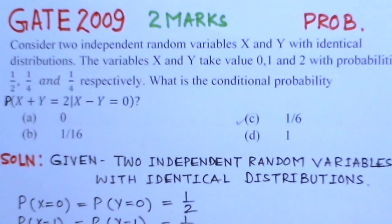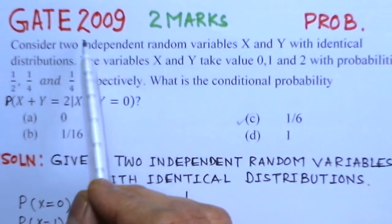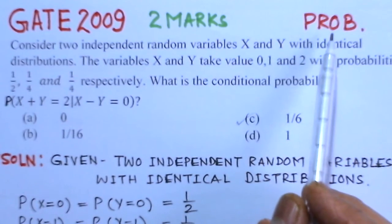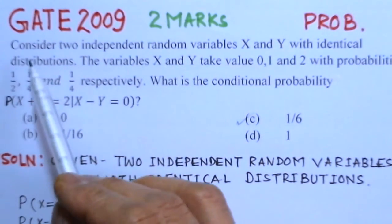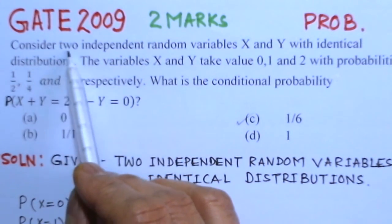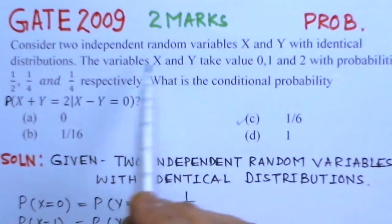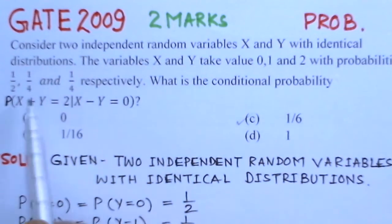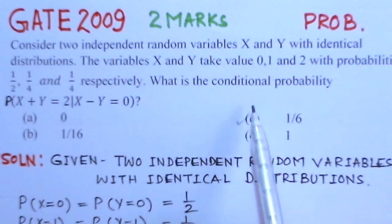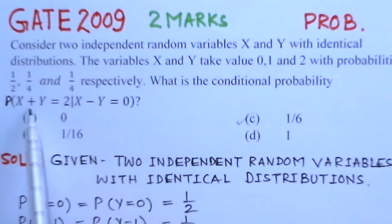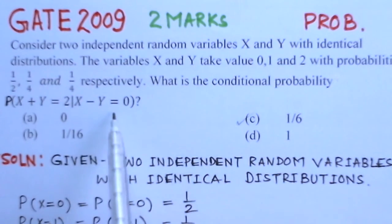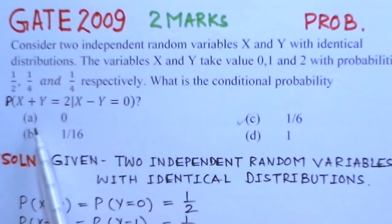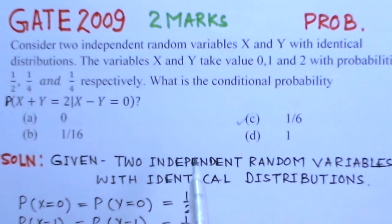This problem is from GATE 2009, worth two marks, and the topic is probability and random variables. Consider two independent random variables X and Y with identical distributions. The variables take values 0, 1, and 2 with probabilities 1/2, 1/4, and 1/4 respectively. We need to find the conditional probability P(X+Y=2 | X-Y=0).